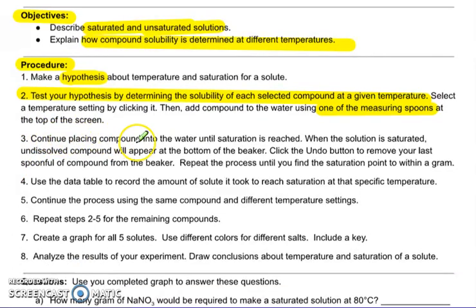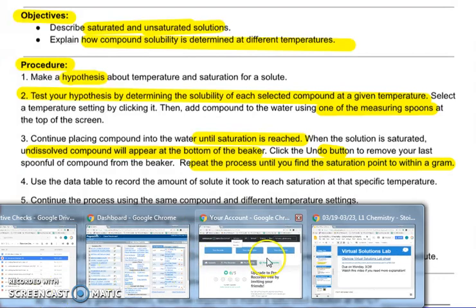This is where you have to be careful. You're going to continue placing the compound into the water until saturation is reached. When it is saturated, undissolved compound will appear at the bottom of the beaker. So as soon as you go past that saturation point, you're going to get solids on the bottom. Click undo to remove your last spoonful and repeat until you find the saturation point within a gram. So let me show you what that looks like.